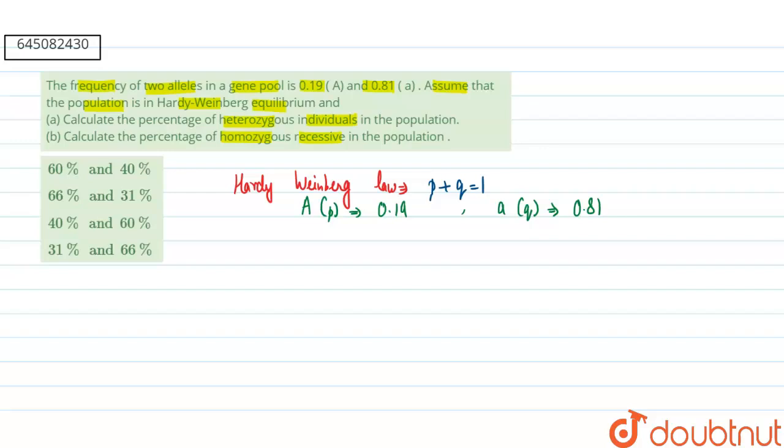So if we are talking about our first question, calculate the percentage of heterozygous individuals in the population. Heterozygous individuals means we are talking about the 2pq condition, or we can say 2Aa condition.